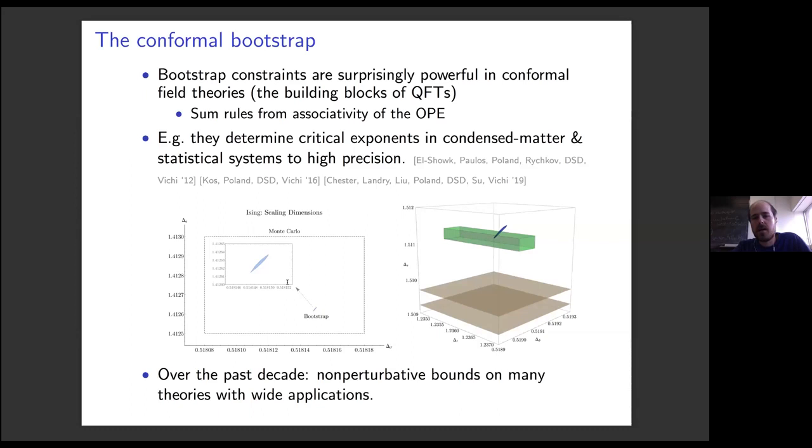Conformal field theories come equipped with a large set of sum rules coming from the associativity of the operator product expansion. Using this method of linear functionals and techniques like semi-definite programming, we've learned that these sum rules, when combined with positivity, contain a surprising amount of information about CFTs. As an example, they often determine critical exponents in CFTs that are relevant for condensed matter and statistical systems to high precision.